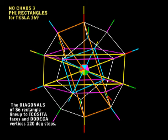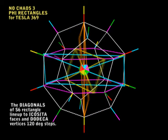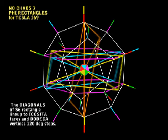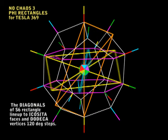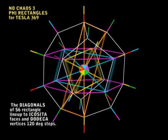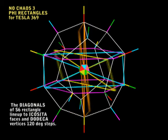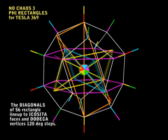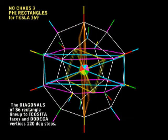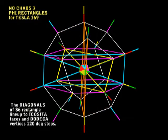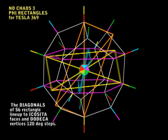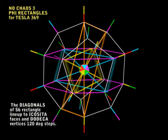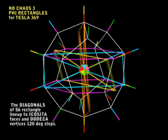Look what happens when I rotate the three rectangles in a group at 120-degree steps. Now you can see that the three rectangle group lines up perfectly with all the vertices of the dodeca in the 120-degree steps.